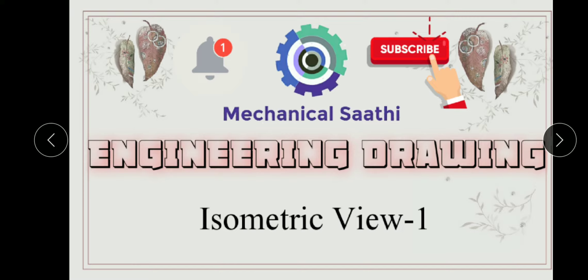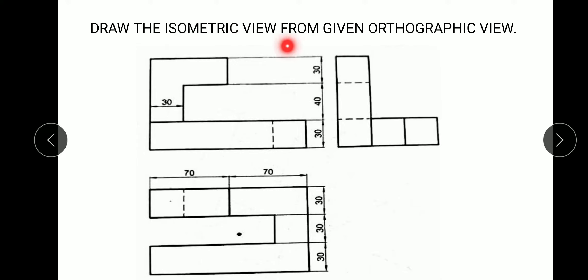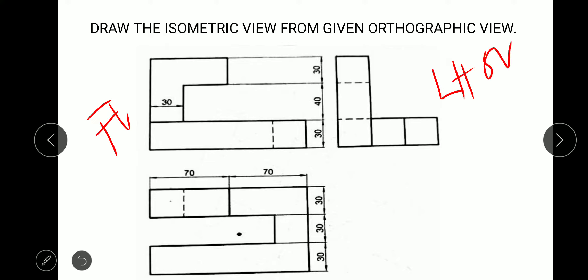The question is: draw the isometric view from the given orthographic view. Looking at the given orthographic view, we can identify the front view, the left-hand side view, and the top view. From this arrangement we can determine that this is drawn in first-angle projection. The first thing we need to determine is the angle of projection.